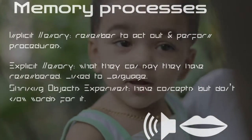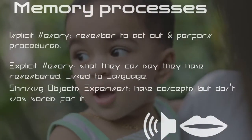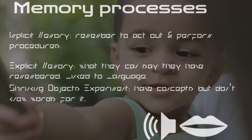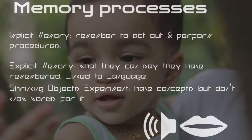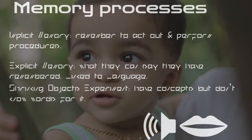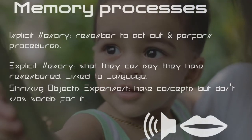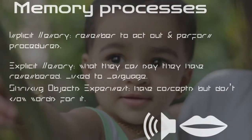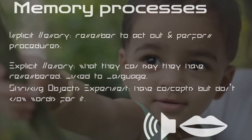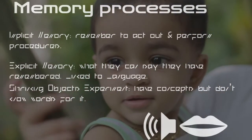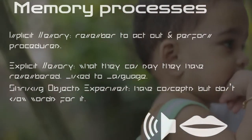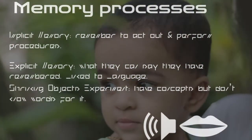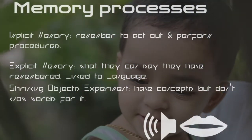Explicit and implicit memory is important for educators to recognise since infants may not be able to state the words about certain actions, but have concepts for them despite not existing in their vocabulary. Therefore, an understanding of implicit and explicit memory processes is useful, especially when infants act out behaviours before they have the understanding for the words.